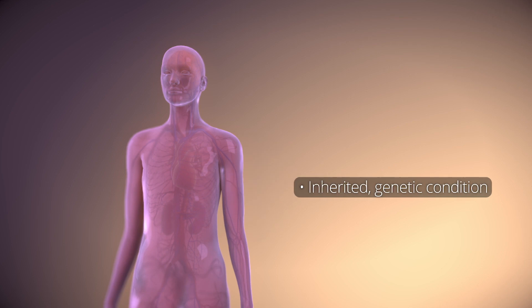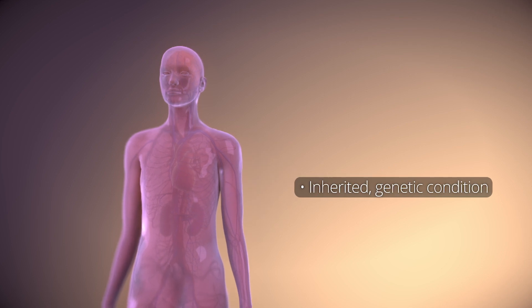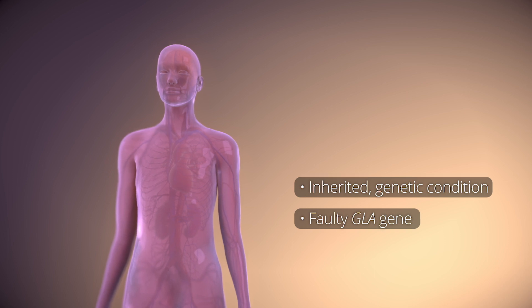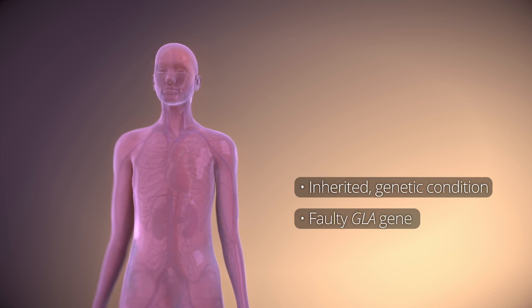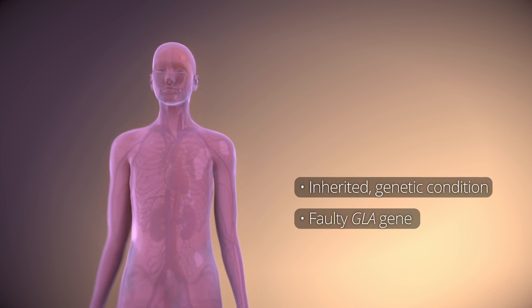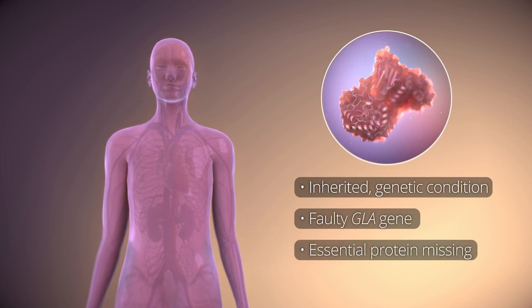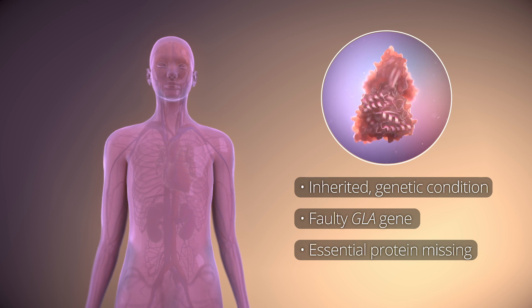Fabry disease is an inherited genetic condition that is caused by a problem with a gene called the GLA gene, which is passed on through your family. The GLA gene contains DNA that normally produces an essential protein. This protein is missing or doesn't work properly in people with Fabry disease.